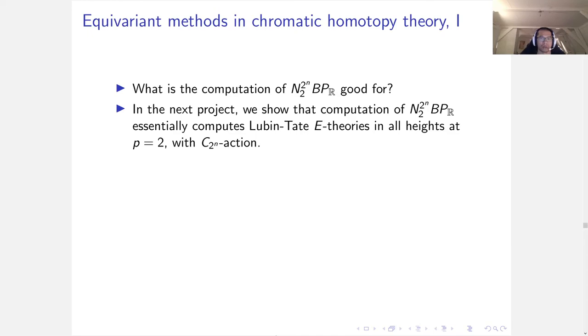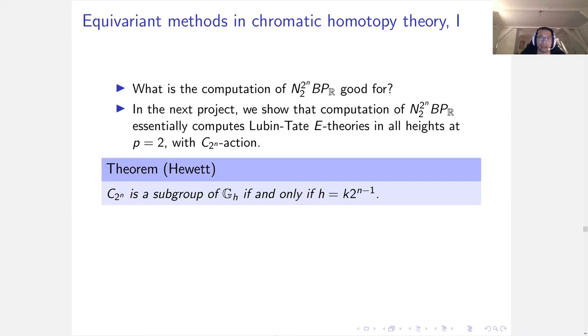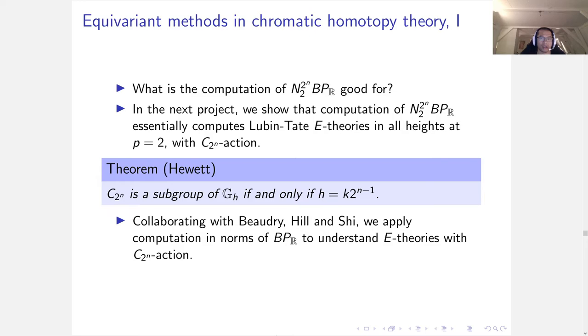A theorem of Hewett says that C_2^n is a subgroup of the Morava stabilizer group if and only if the height is a multiple of 2^{n-1}. In joint work with Beardsley, Hill, and Shi, we apply computation in norm of BP_R to understand E-theory equivariantly.